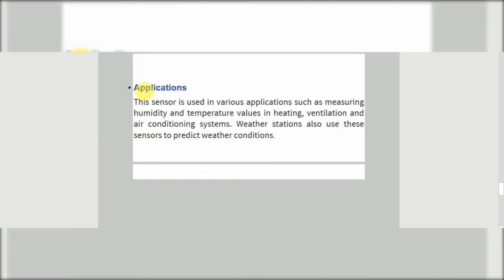Applications of the DHT11 sensor: this sensor is used in various applications such as measuring humidity and temperature values in heating, ventilation, and air conditioning (HVAC) systems. Weather stations also use these sensors to predict weather conditions.